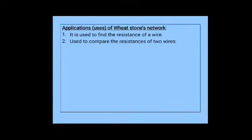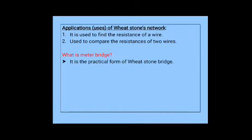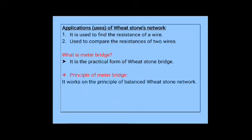What are the applications of Wheatstone's network? First, it is used to find the resistance of a wire. Second, it is used to compare the resistances of two wires. You may get a one-mark question: what is a meter bridge? A meter bridge is the practical form of Wheatstone's bridge. Its principle is that it works on the principle of a balanced Wheatstone's network, where R1/R3 = R2/R4 when IG = 0.